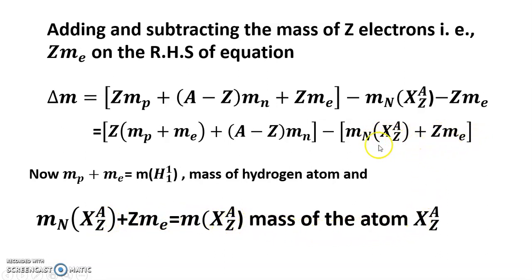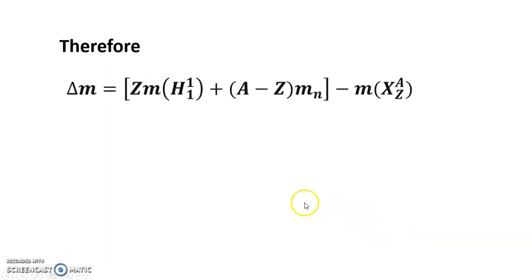When electron is added then it is mass of the atom. Therefore, del m equals Z m of H_1^1 plus A minus Z m_n minus m of X_Z^A.